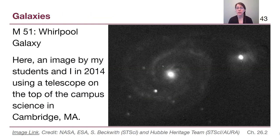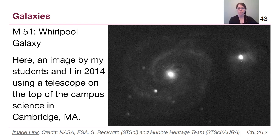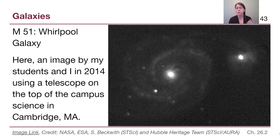Let's start with Messier catalog object M51. There is an image taken by students in 2014 on top of a campus science building in Cambridge, Massachusetts — just collecting broadband visible light. There is structure there, though it can be hard to see. You can kind of look at it out of the corner of your eye. We can tell why it took a while to decide these weren't nebulae but are instead galaxies.